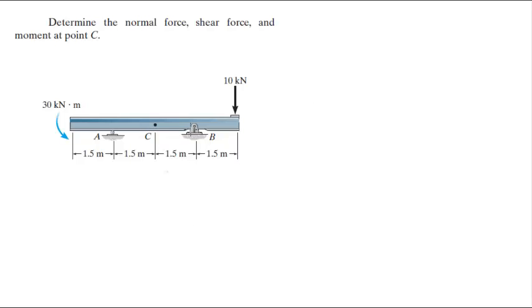So basically as you can see here at this point we have this reaction and this reaction. So when we use the method of sections, we got to use the left side because in A we only have a positive reaction right here, let's call it AY.